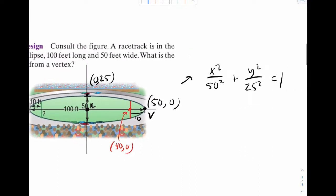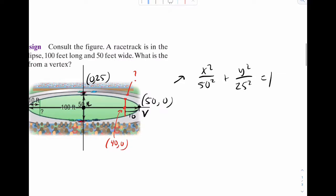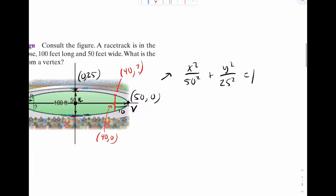What I can do is use this equation, and let's just find that point up there. So I'm wondering, what is this point? I can easily find that, because I know the x coordinate is 40, I just don't know the y coordinate. Let's plug it in. So 40 squared over 50 squared plus y squared over 25 squared should equal 1.